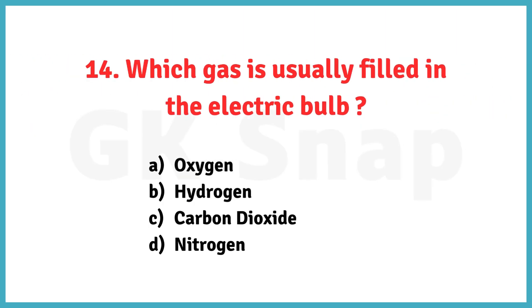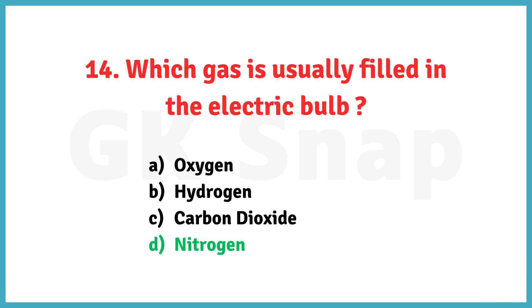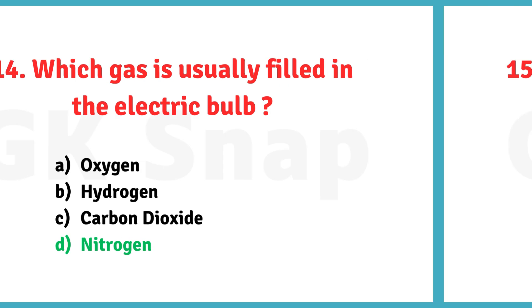Which gas is usually filled in an electric bulb? Correct answer is option D. Nitrogen.